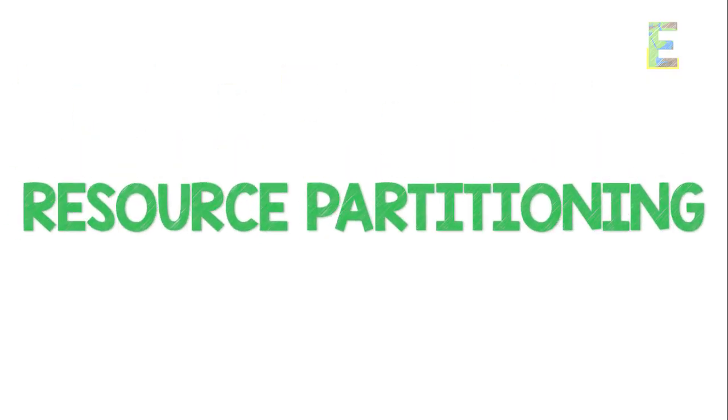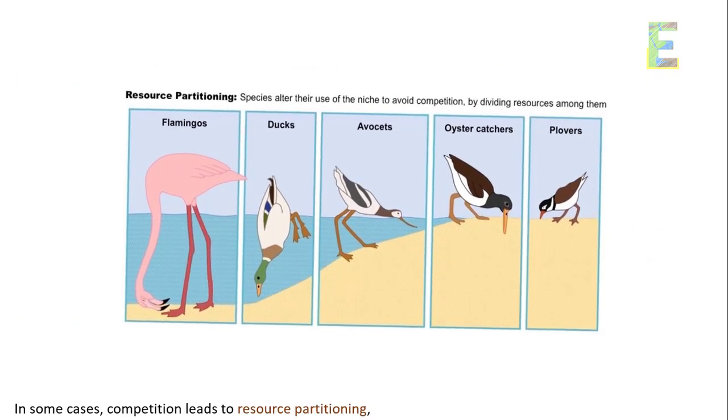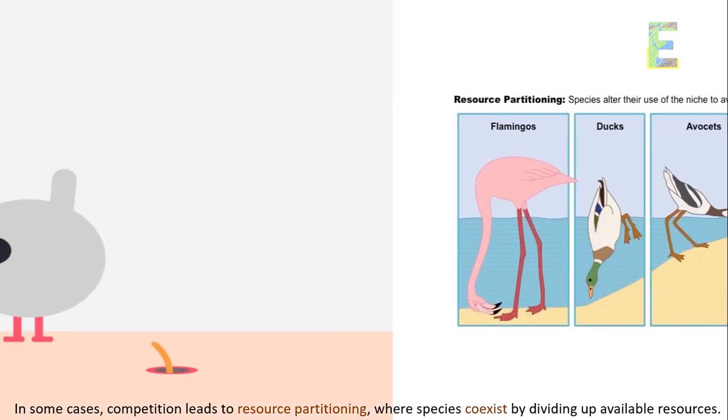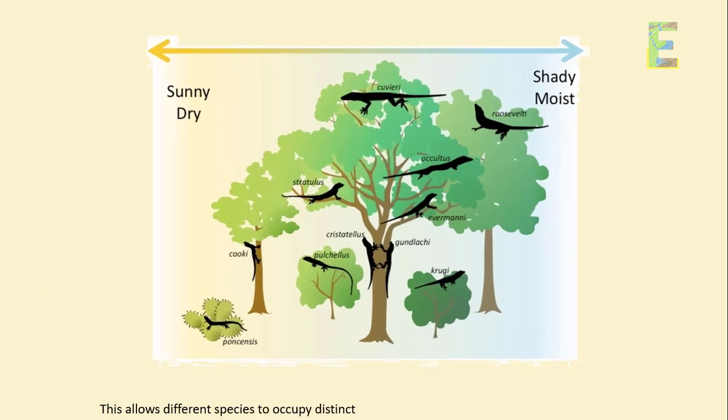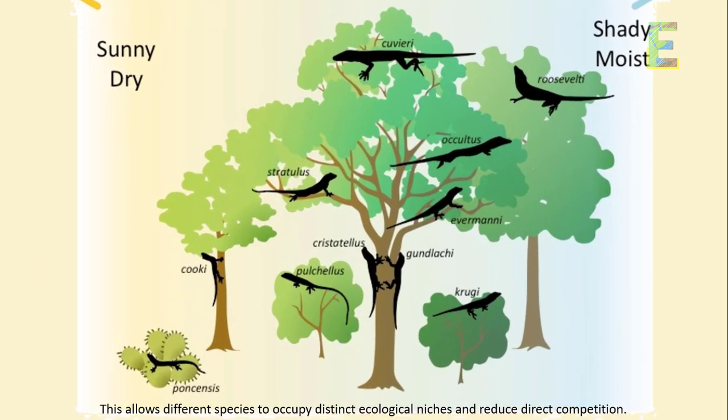Resource partitioning. In some cases, competition leads to resource partitioning, where species coexist by dividing up available resources. This allows different species to occupy distinct ecological niches and reduce direct competition.